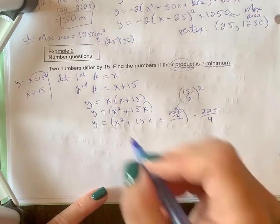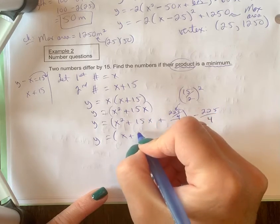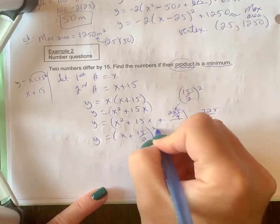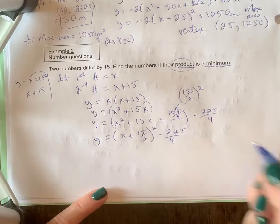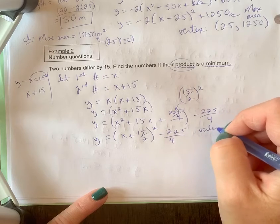15 over 2 squared is 225 over 4, which means you have to subtract that here as well. There's no number to multiply in front, so y equals x plus, when we square root this again we're back to 15 over 2 squared minus 225 over 4.